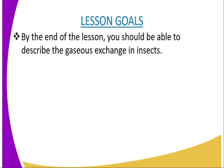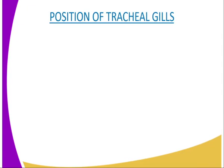The tracheal system of an insect, which forms its breathing system, consists of the spiracles, the trachea, and the tracheoles. The spiracles are external openings present on either side of the abdomen and thorax of an insect, through which air from the atmosphere enters the body.